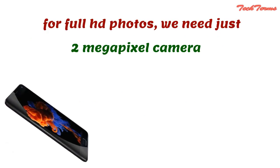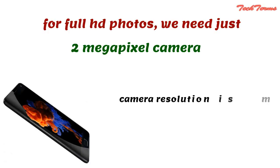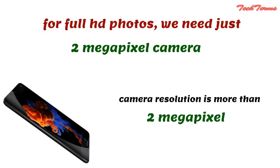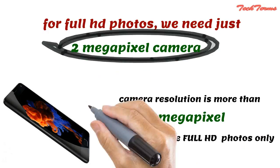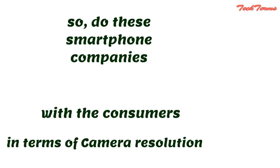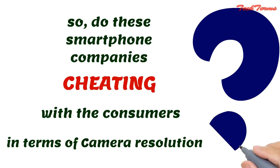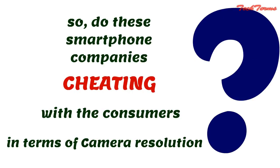But the smartphones coming these days have a camera resolution of more than 2 megapixel — like 8 megapixel, 16 megapixel, 21 megapixel — and they too take full HD photos only, which can also be taken from a simple 2 megapixel camera. So are smartphone companies cheating consumers in terms of camera resolution? The answer will be provided in the next video, so stay tuned.